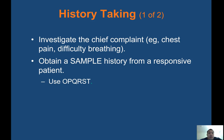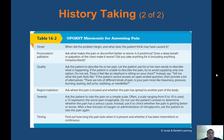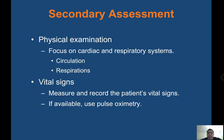History taking: investigate the chief complaint — chest pain or difficulty breathing. Obtain a SAMPLE history from a responsive patient using OPQRST. Onset: when did the problem begin? Provocation/palliation: does anything make it better or worse? Quality: ask them to describe the pain — sharp, dull, or tearing? Region/radiation: where is the pain located? Severity: how bad is the pain on a 1 to 10 scale? Timing: how long does the pain last and when is it present?